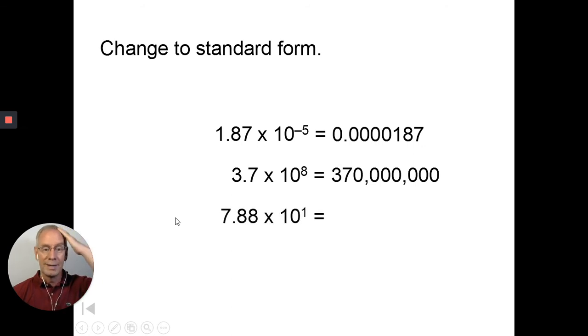Let's try this one. 7.88 times 10 to the first. Well, because we're multiplying by 10 to the positive power, multiplying by 10, that means this is going to be 78.8. We're going to move it just over one place. Now, in this case, it probably would have been easier to write it in standard notation than scientific notation.